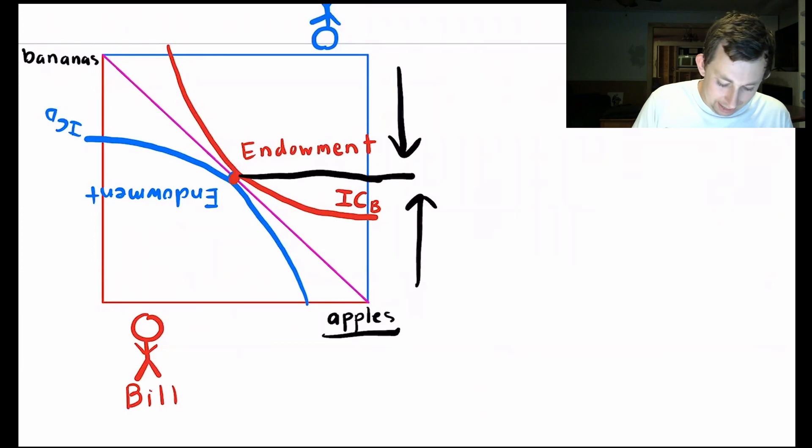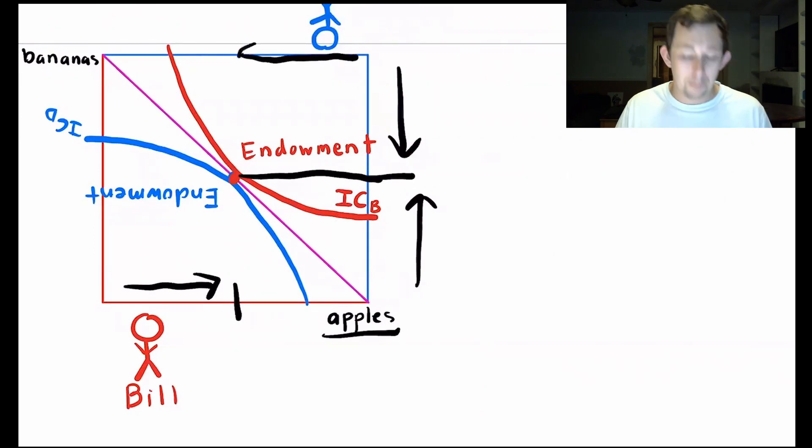Now, if I go on the x-axis, this way is how many apples Bill has and going this way on the x-axis is how many apples Dave has.